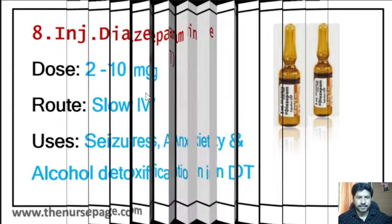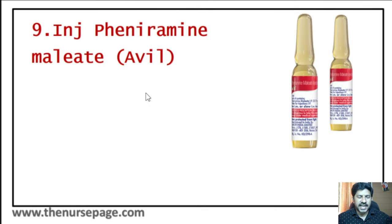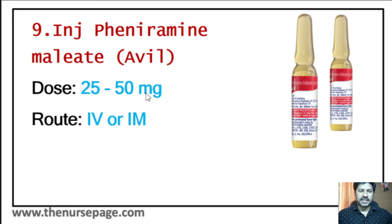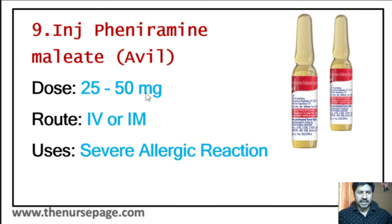Ninth injection is pheniramine maleate, commonly known as Avil. Dose is 25 to 50 milligram. Route of administration is intravenous or intramuscular. Indication is severe allergic reaction or anaphylactic reaction.